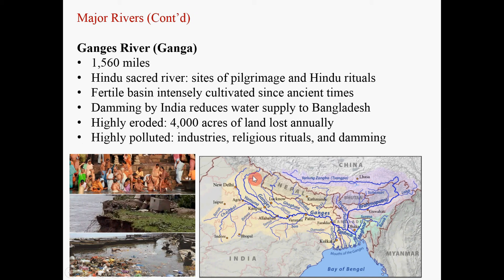The Ganges River — the Indians also call this river the Ganga — is 1,560 miles long. The Ganges River is a sacred river for the Hindus. There are many sites of pilgrimage along the Ganges River, and every year we see millions of Hindus step into the waters of the Ganges to perform ritual purifications and purify their souls. The Ganges River also supports a very fertile land for agriculture, and this river basin has been intensely cultivated for thousands of years since ancient times.